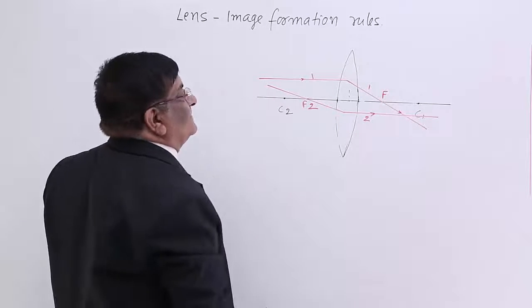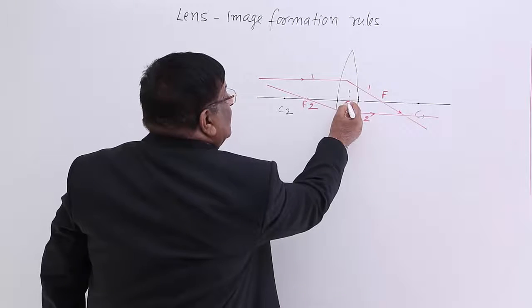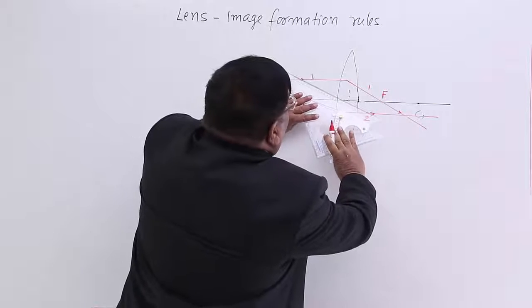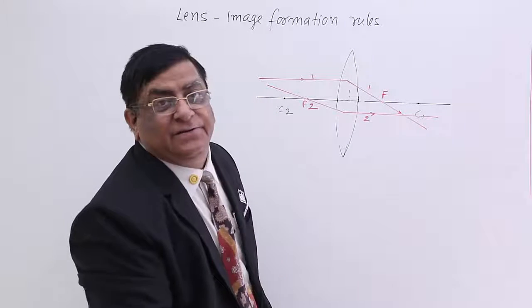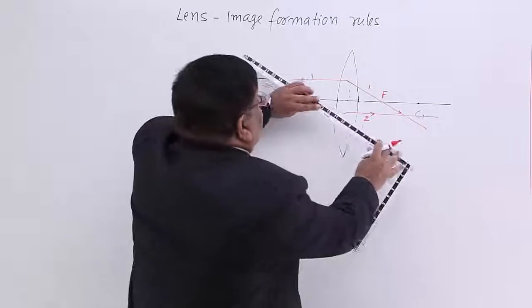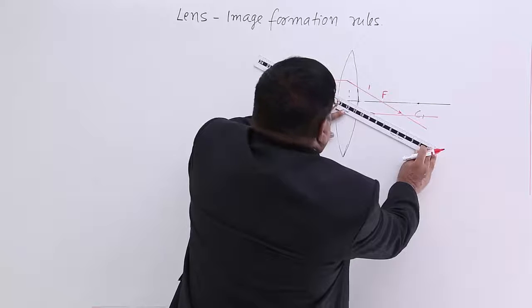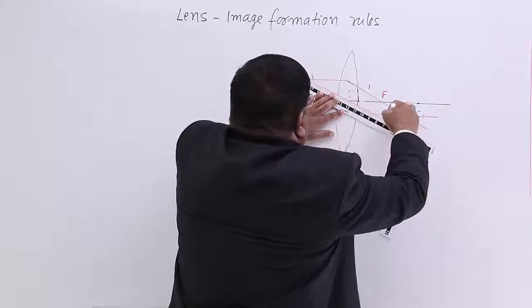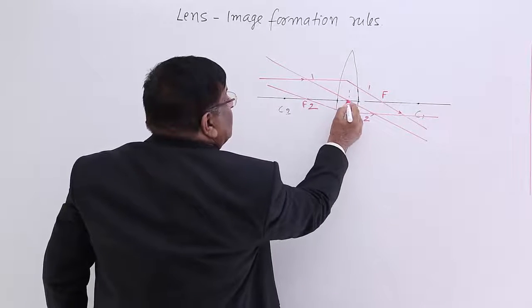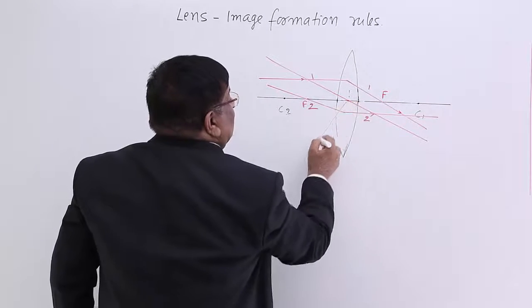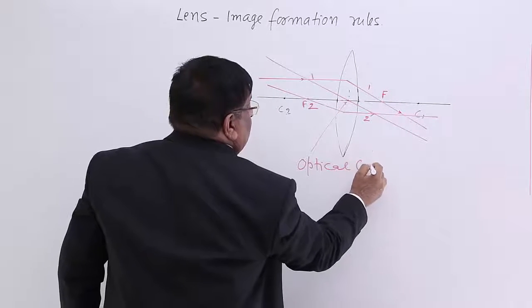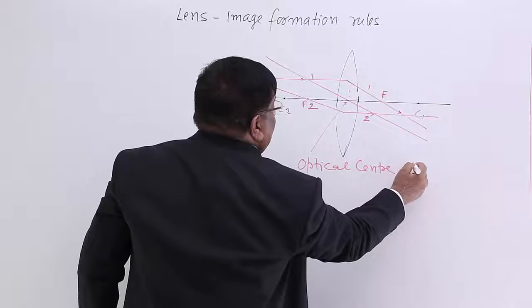Now third, there is one particular point here. Any ray which is directed to this point will pass through undeviated. It will not deviate from its path, it will remain on its path. This point is known as optical center of lens.